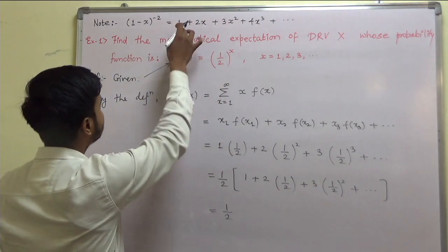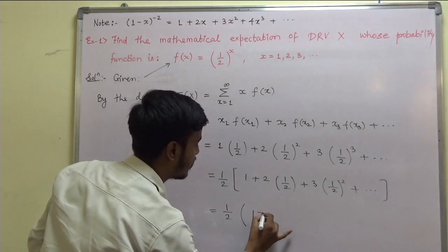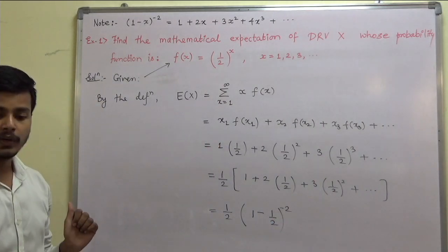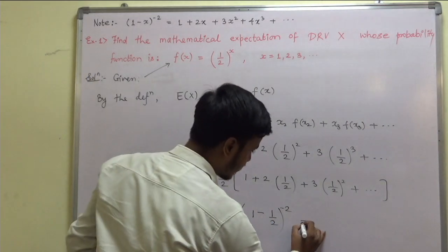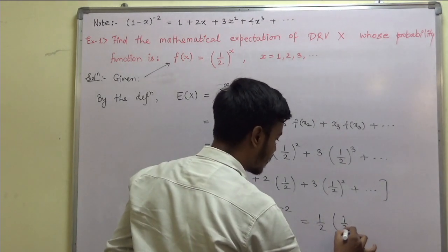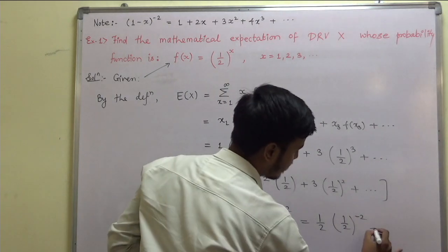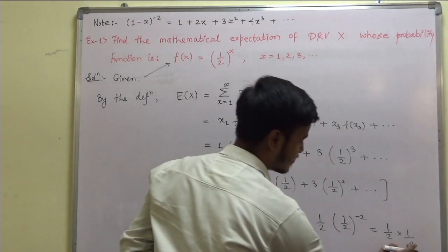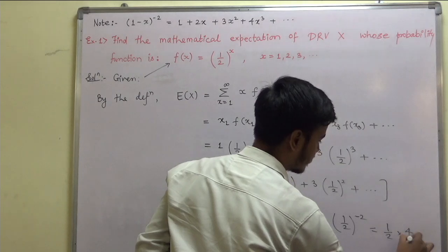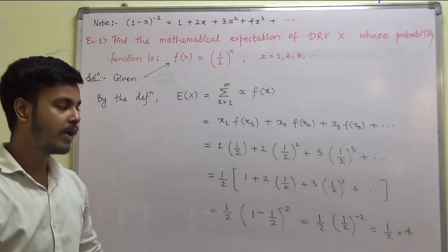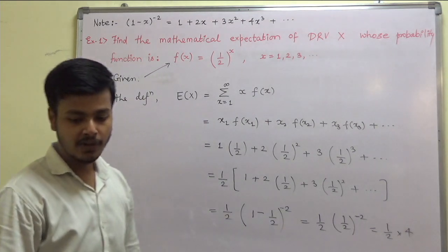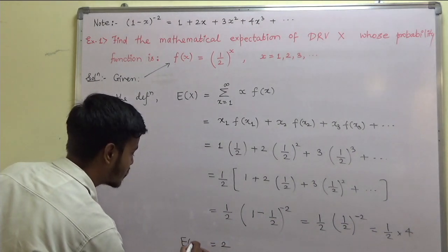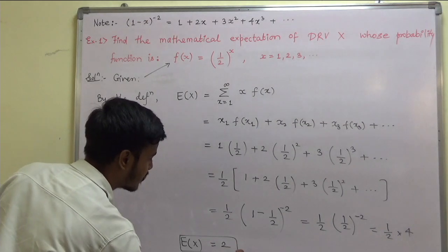Here x is 1 by 2. So using this, I can write 1 by 2 times 1 minus 1 by 2 to the power minus 2. This simplifies to 1 by 2 times 1 by 2 to the power minus 2, which equals 1 by 2 into 1 by 4 taken as a whole, giving us the answer of 2. So the expectation of x in this problem is 2.